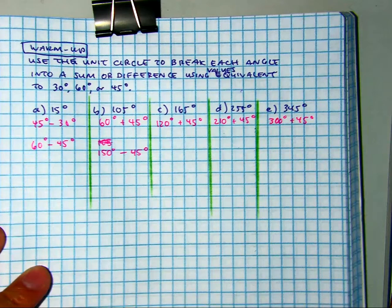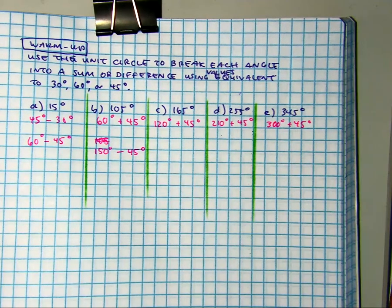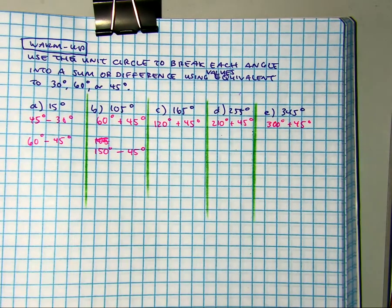And those are on the unit circle. So today's lesson, we're going to be taking two angles that are on the unit circle to either add or subtract them to get that number.